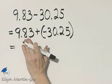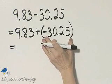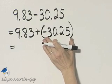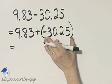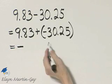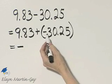Well, the absolute value of this number is this number, and the absolute value of negative 30.25 is positive 30.25. This has the larger absolute value, which means the answer will be negative, the same as the sign of this number.